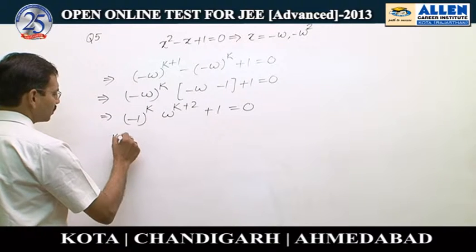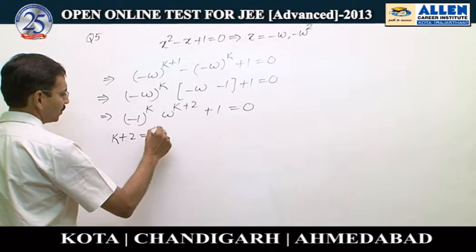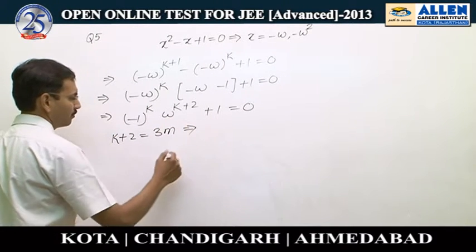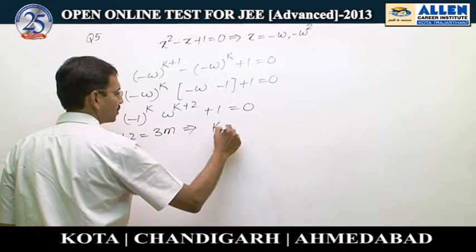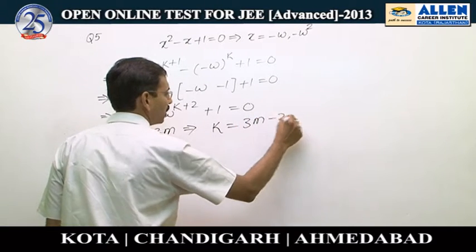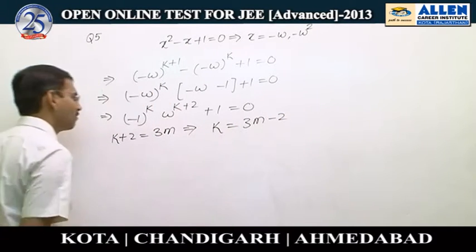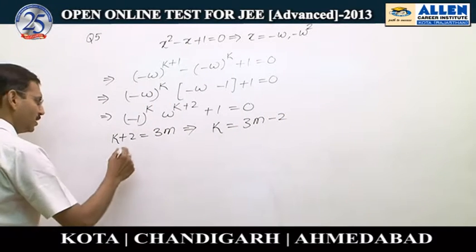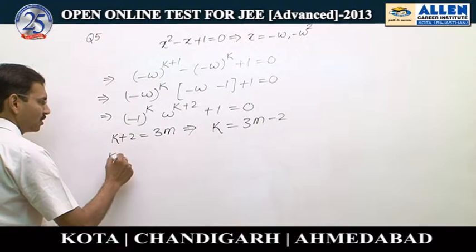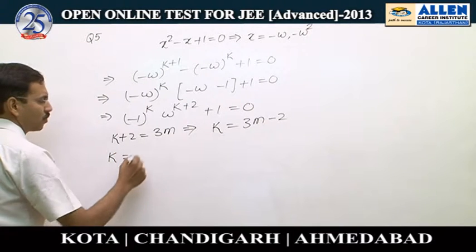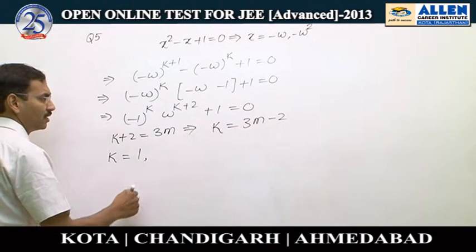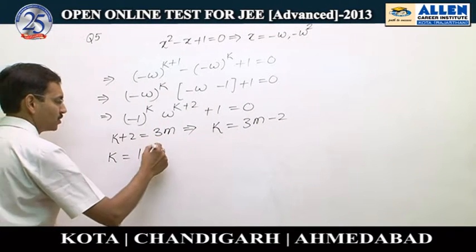So k + 2 must be a multiple of 3. Let's say it is 3m, so k = 3m - 2. Taking odd values of m: if m = 1, then k = 1. If m = 3, then 9 - 2 = 7.